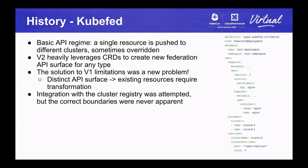In the federated deployment spec, we have a section called placements and overrides — and those are sort of what they sound like. The placement section contains which clusters this resource goes to. The overrides contain how it changes in a particular cluster. Under overrides, it's a list with one item: cluster name is cluster two, and the override says the spec replicas field should be five instead of three.